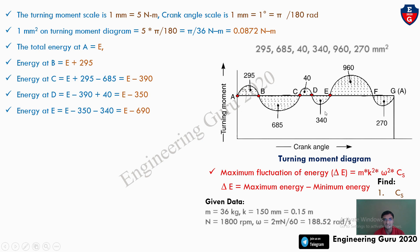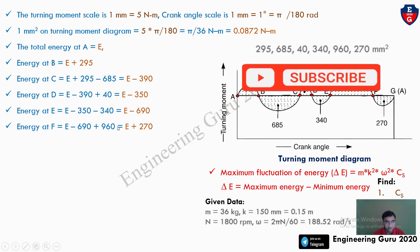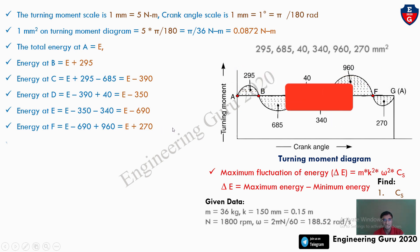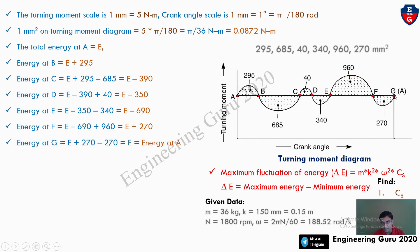Energy at point E = E + 295 − 685 + 40 − 340 = E − 690. Energy at point F = E + 295 − 685 + 40 − 340 + 960 = E + 270. Energy at point G (end point, connects back to A) = E. From these values, maximum energy is at point B and minimum energy is at point E.